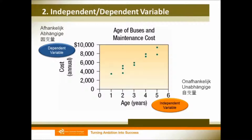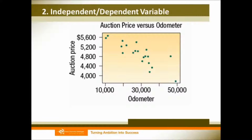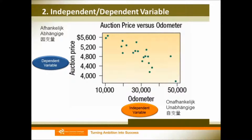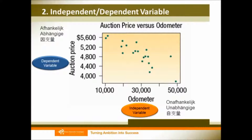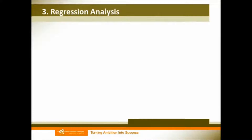And let's look at this one. It is easy to discern that the odometer is our independent variable, and the auction price is our dependent variable. There is a negative correlation between our independent and dependent variable in this case. All regression analysis is based on the correlation between independent and dependent variables.